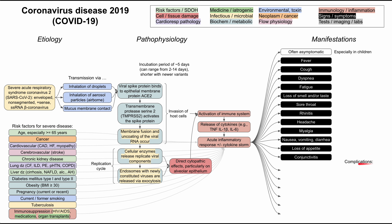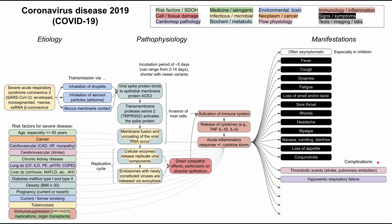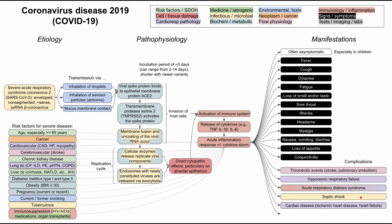There are acute complications worth knowing. Deaths from COVID-19 are usually due to complications rather than the symptoms themselves. These include thrombotic events such as stroke and pulmonary embolism; hypoxemic respiratory failure from congestion and inflammation in the lungs; acute respiratory distress syndrome; septic shock; viremia; cardiac disease including ischemic heart disease causing heart attacks and exacerbation of heart failure; and acute kidney injury from decreased blood flow to the kidneys.